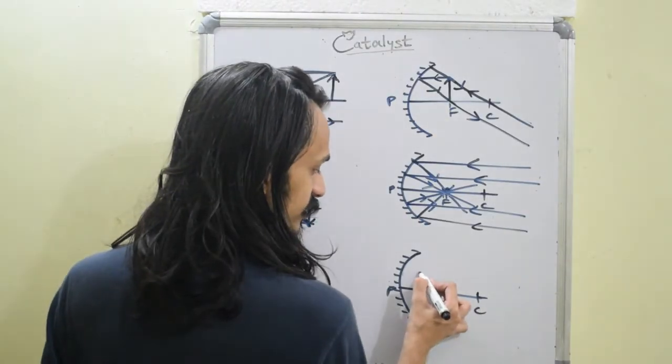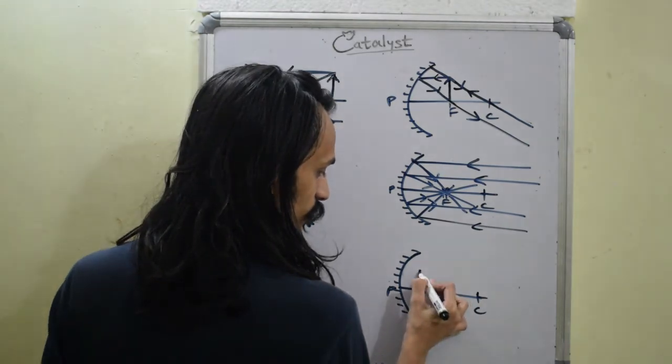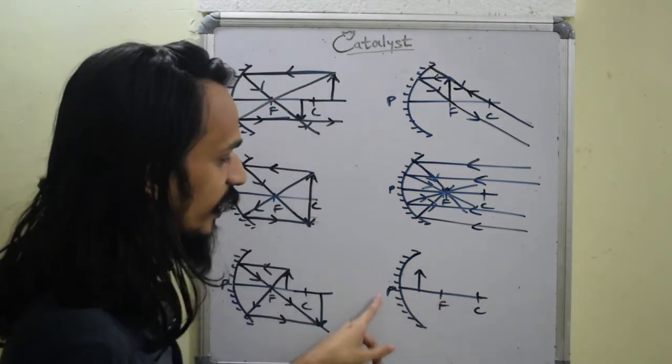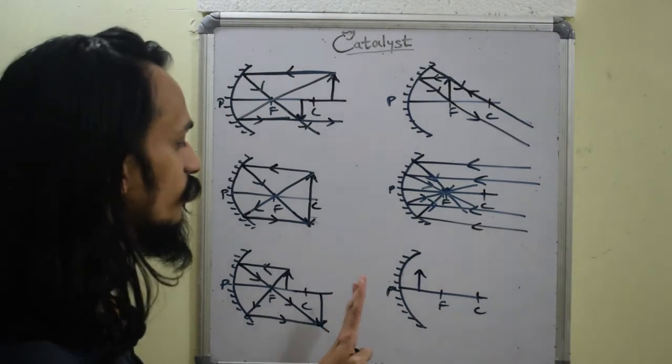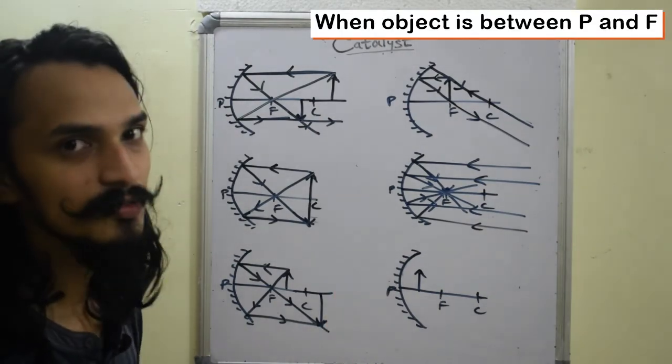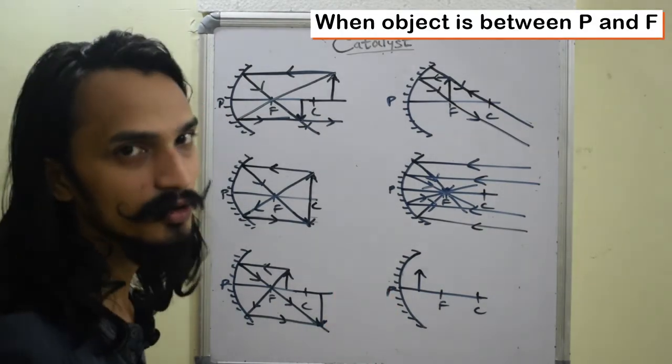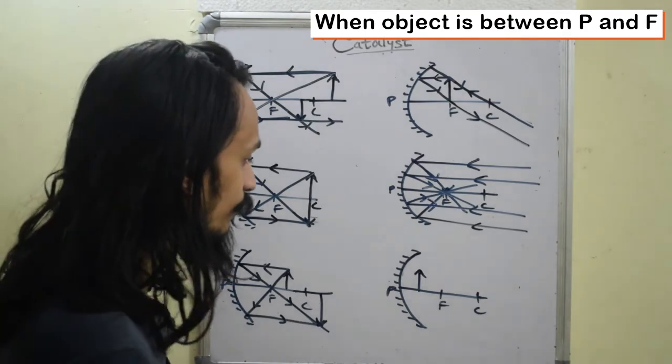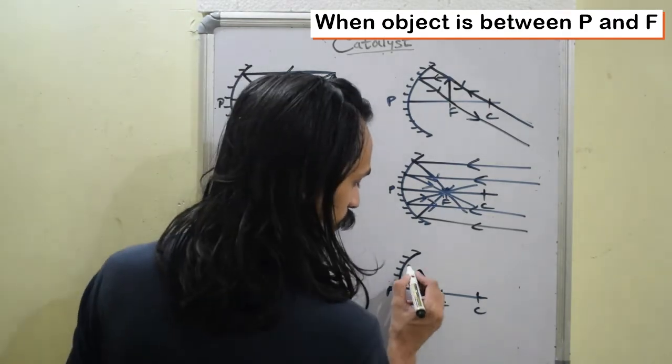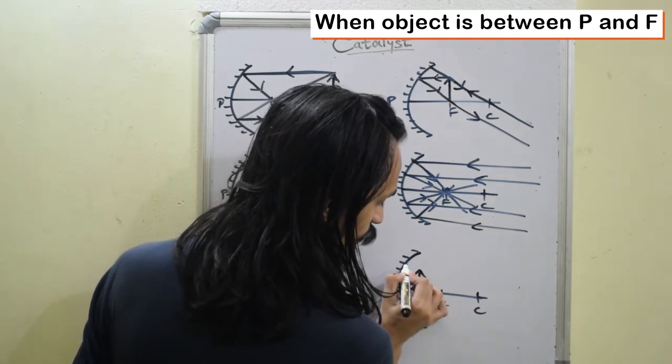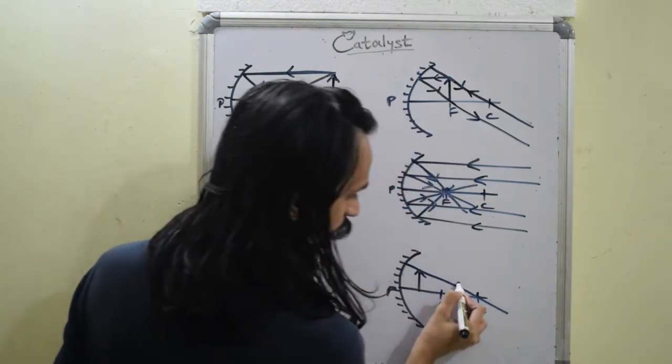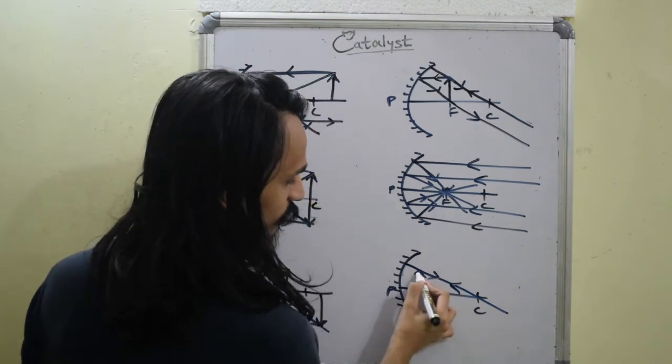Now, lastly, the sixth case that is between F and P. Now, this will not be recorded on the experiment because this is an image that cannot be recorded on the paper. It will not come on the screen. I will tell you why. So for this, the first case I will see is through C. Again incident reflect through C.